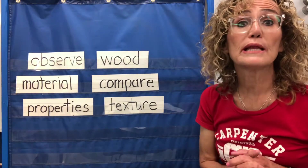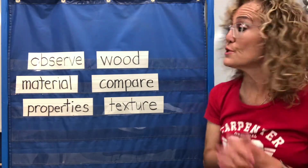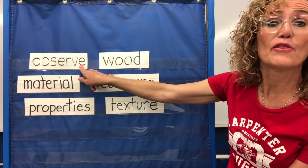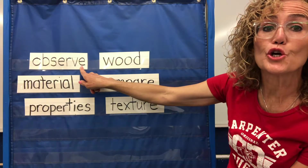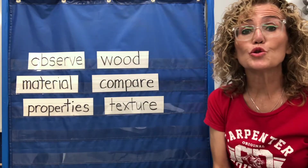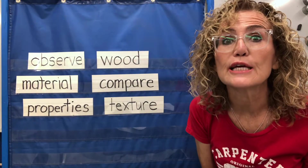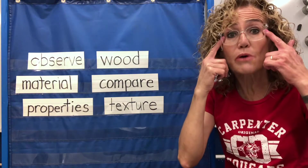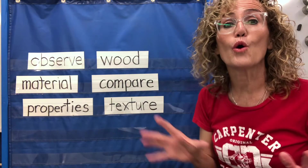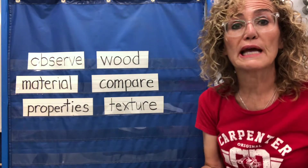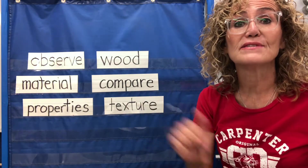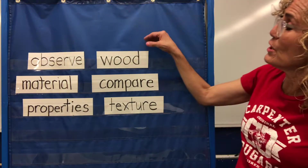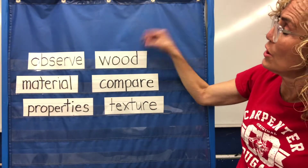We learned some really important words. One of the words that we learned was the word observe. Observe means to look really closely, but not just using your eyes. We can observe the whole world using our five senses. And then we learned about the word wood.